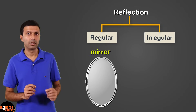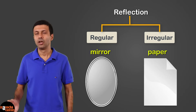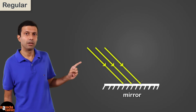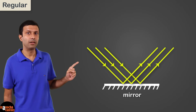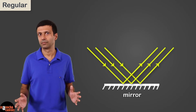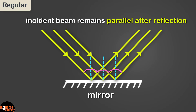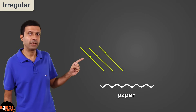It's easy to understand the difference between regular and irregular reflection if we consider a parallel beam of light falling on a mirror and on a surface like paper. In the plane mirror case, the parallel beam remains parallel even after reflection. If you look closely, all the rays in the beam have the same angle of incidence, and following the laws of reflection, all the rays will have the same angle of reflection — so the incident beam remains parallel even after reflection.